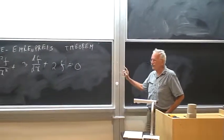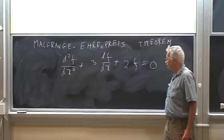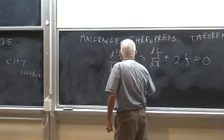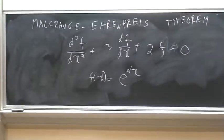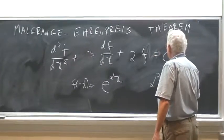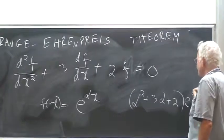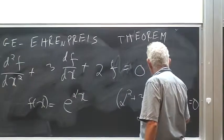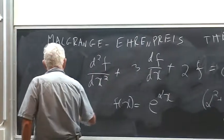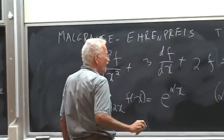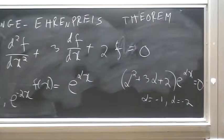Let's review how to solve it, because the same thing will be later on important. You try to have a solution of the form E to the alpha X. You plug it in, and you get alpha squared plus 3 alpha plus 2 times E to alpha X equals 0. You solve it, and you get, in this case, alpha equals negative 1 and alpha equals negative 2. So you got two independent solutions, E to the minus X. So everything is fairly easy with ordinary differential equations. But what about partial differential equations?